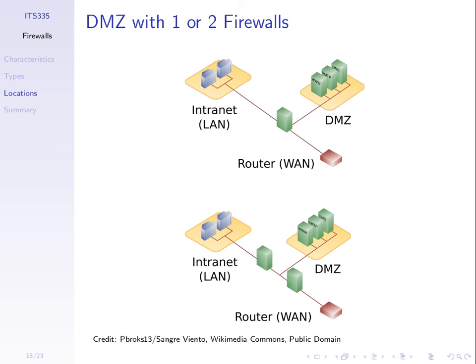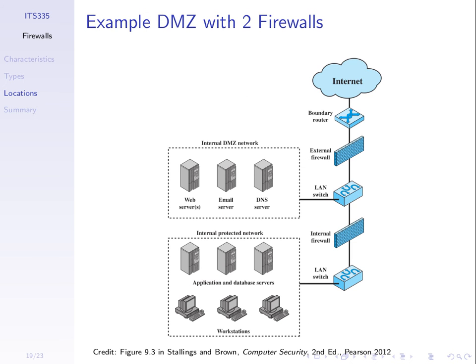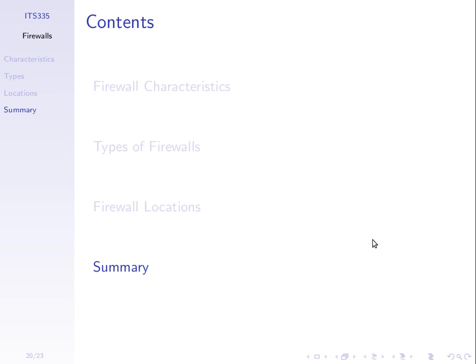The two-firewall configuration is more costly but may be more secure. This shows the external firewall, the DMZ, the intranet, and the internal firewall. Public-facing servers are kept in a separate DMZ zone, and we can use one or two firewalls to protect them.